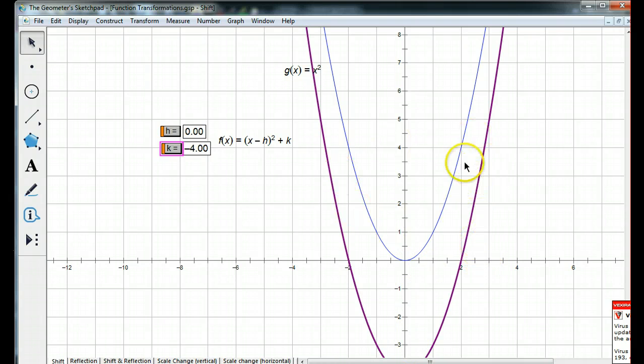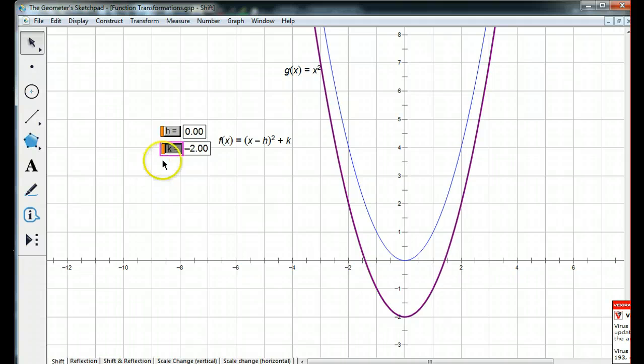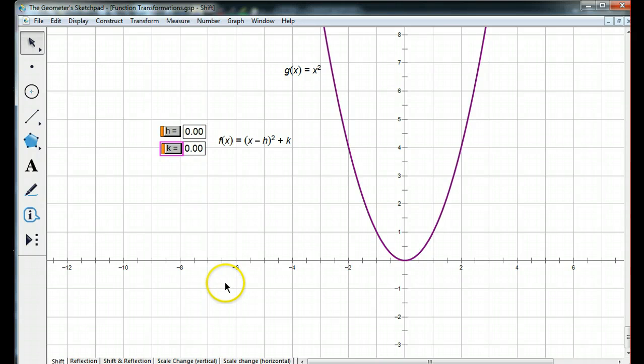Now, it may look like the shape's changing, but it's really not. It's exactly the same parabola. We're just looking at a different section of it. You can see that it lines up exactly over our original g of x equals x squared. So, that's shifting.